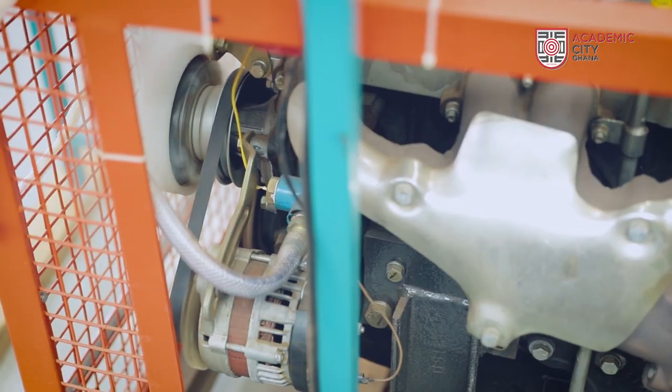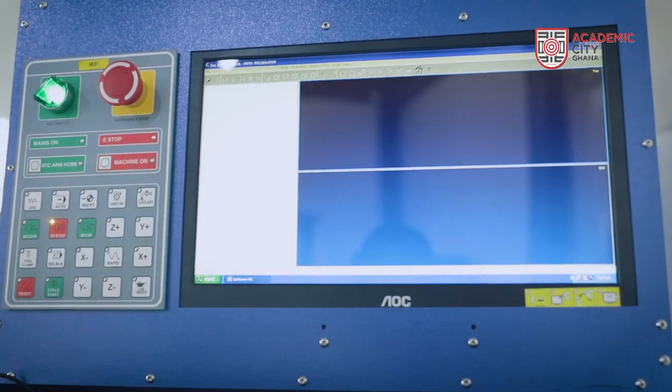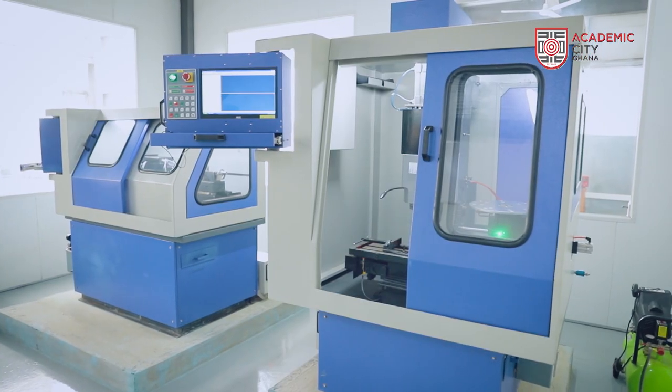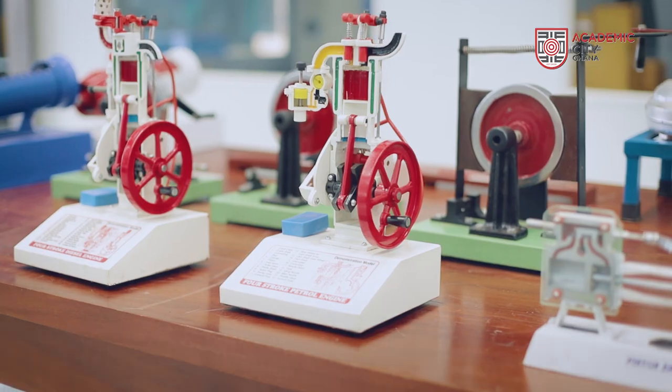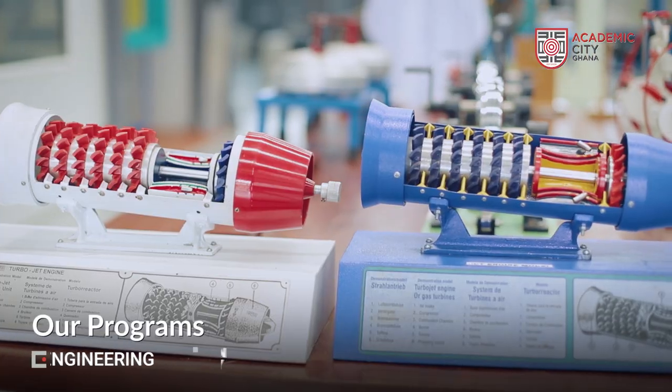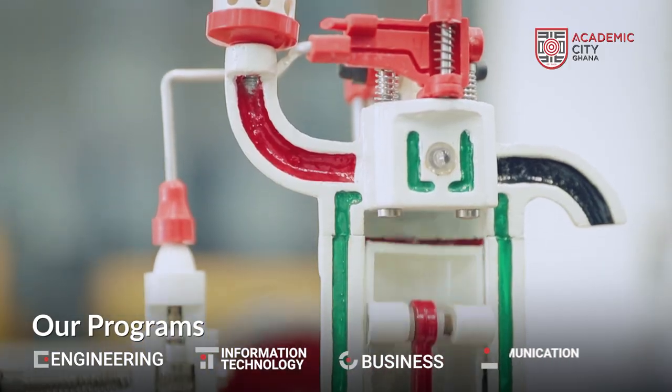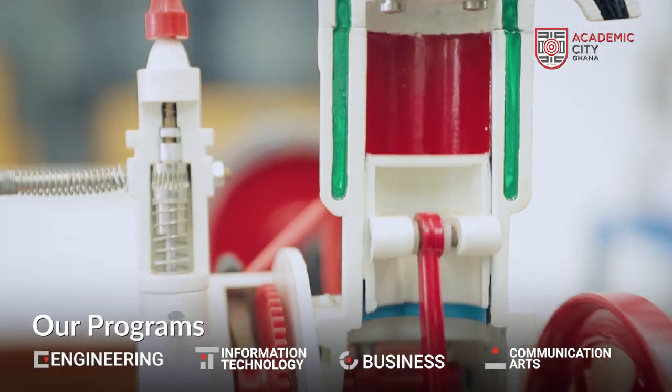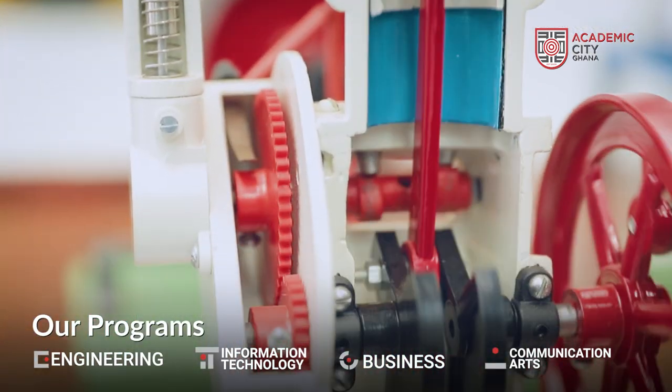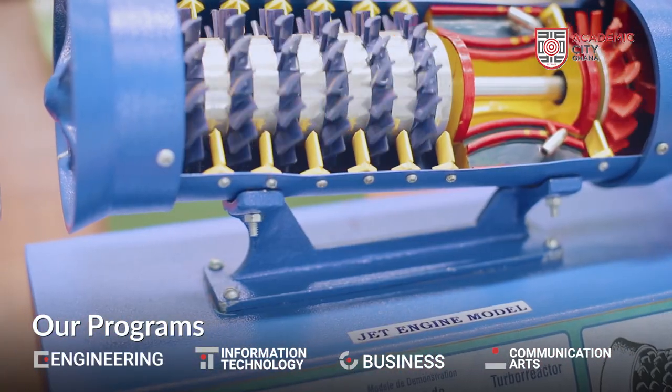In addition to our mainstream equipment, we have some catalytic equipment like the CNC machines. We also have smaller versions of real life systems like engines, turbines, etc. So students get to see for themselves what exactly is happening inside the machine to get a better understanding.